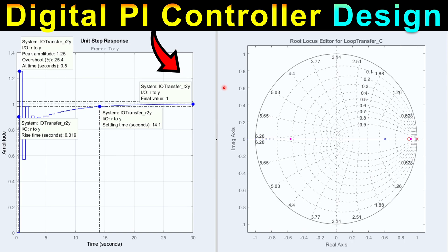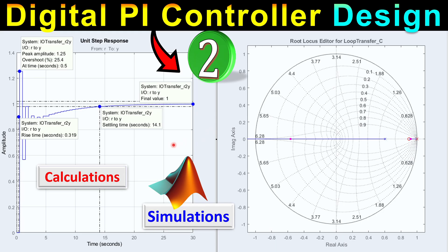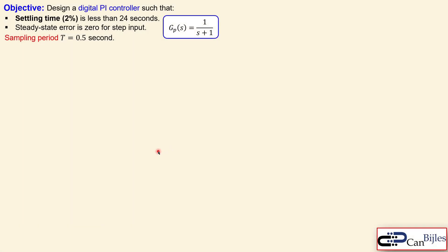Hi everyone and welcome to a new video about digital controller design. This is example number two. We will discuss the PI controller design in the digital domain. We will work out the calculation step by step and also verify these in MATLAB simulations. We would like to design a digital PI controller for this plant, which is a first order system, such that the closed loop system has a settling time with a two percent criterion of less than 24 seconds, the steady state error must be zero for step input, and we will use a sampling period of 0.5 seconds.